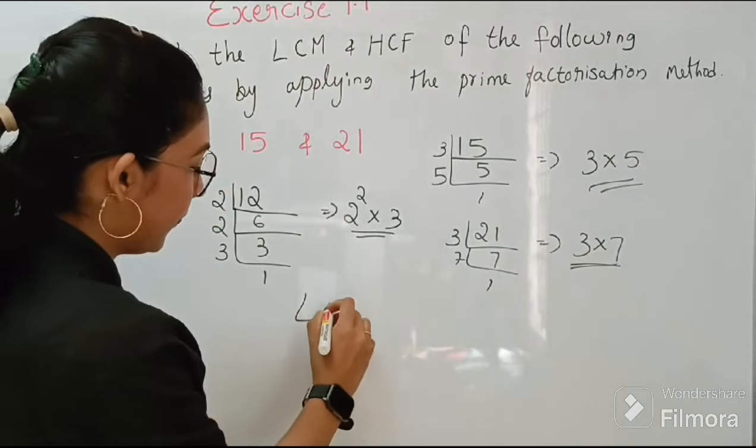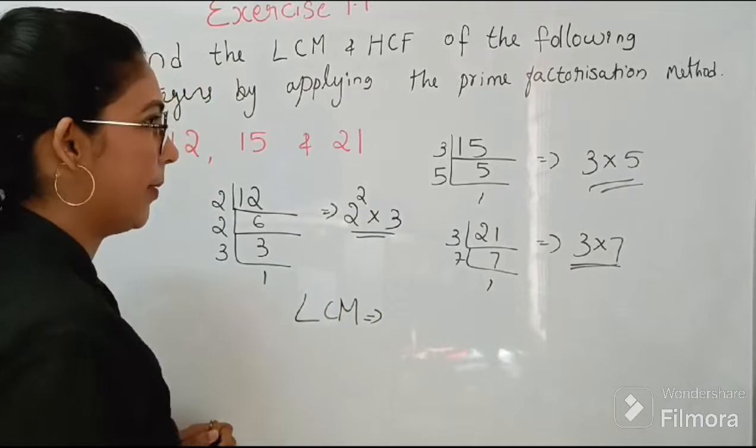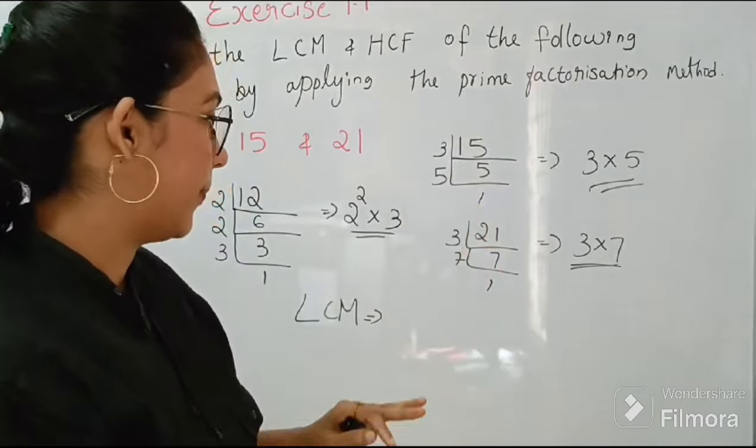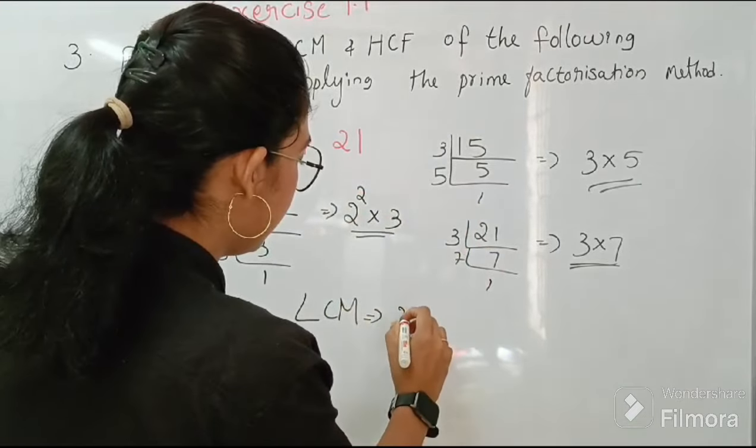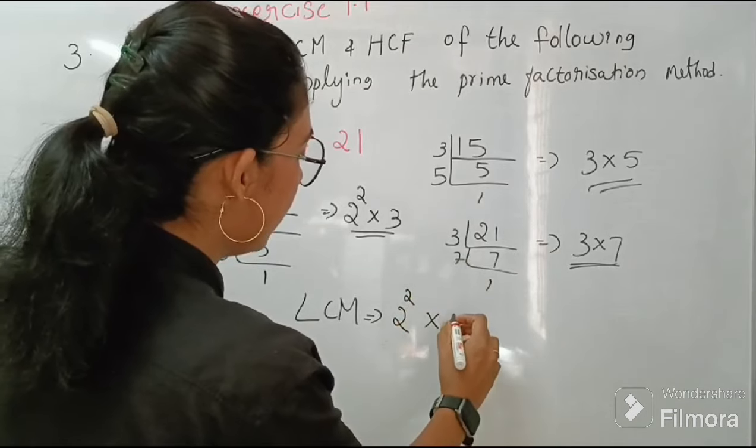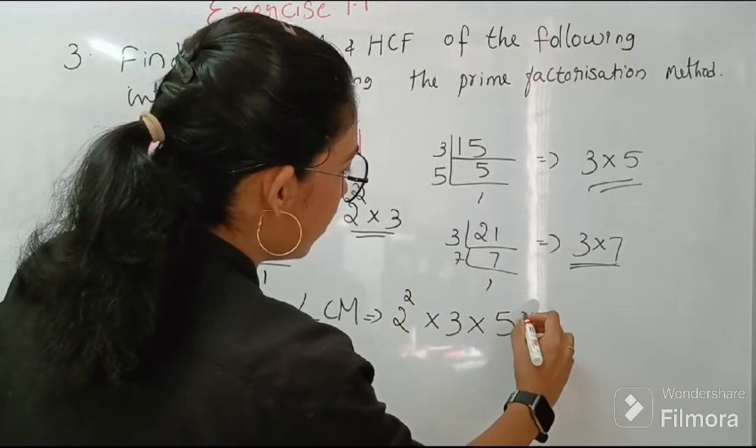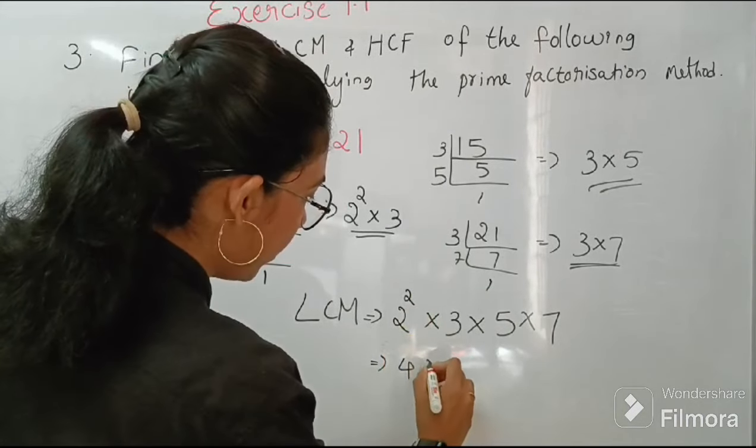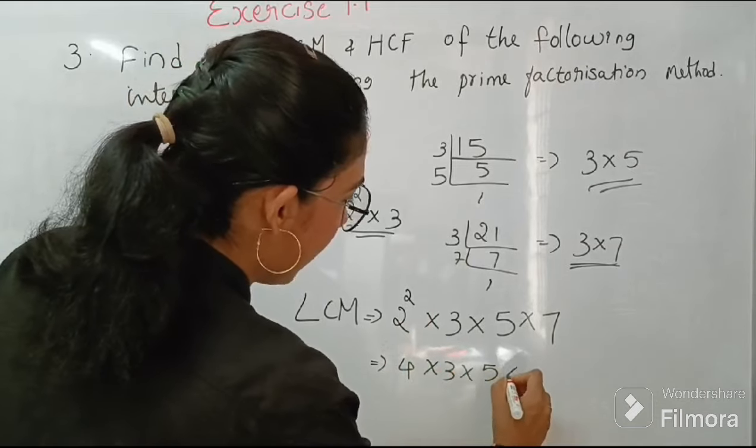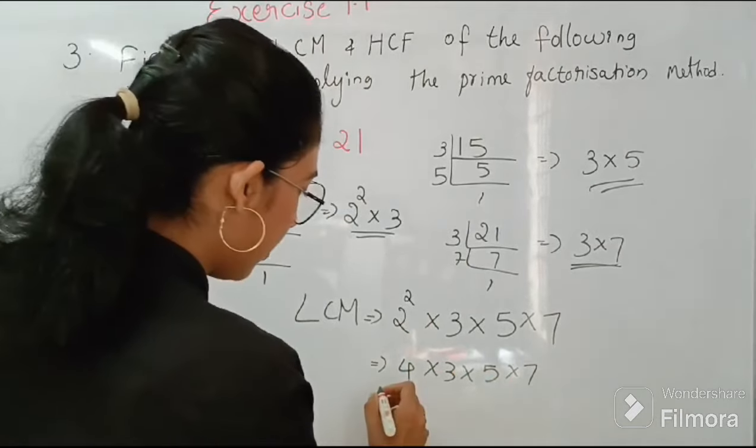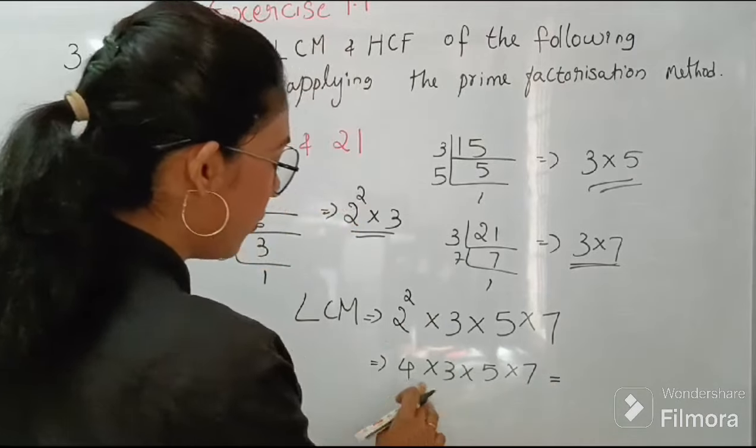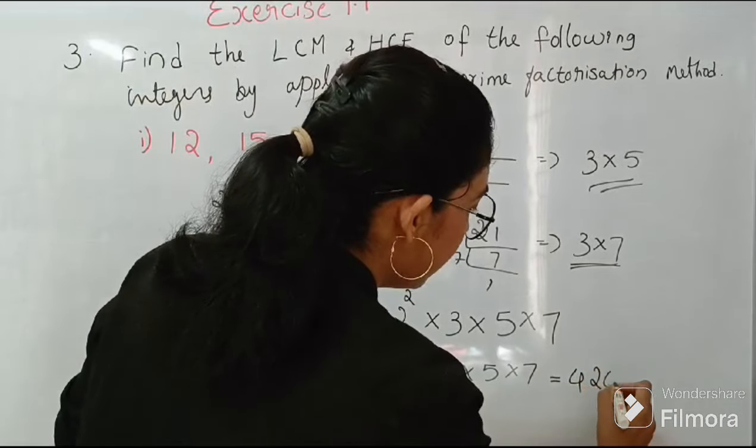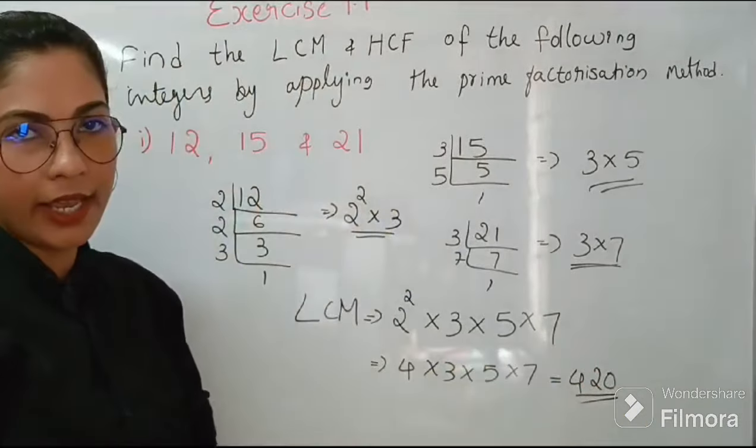So let's find out LCM. What is LCM? Product of greatest power of each prime factors of the numbers. So here it is 2 square into 3 into 5 into 7. What is the answer? 4 into 3 into 5 into 7. So this is equal to 4 times 3 is 12, 12 times 5 is 60, 60 times 7 is 420. So this is LCM.